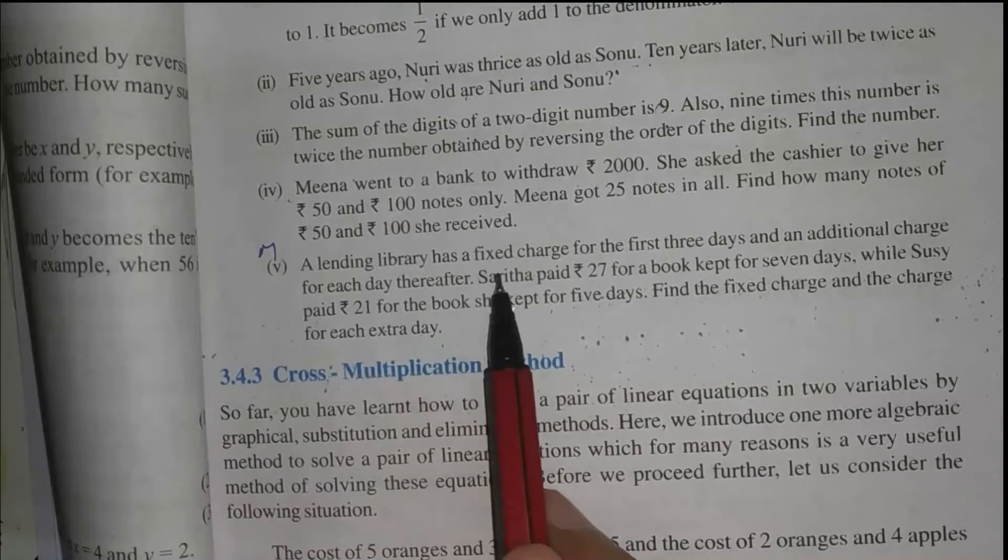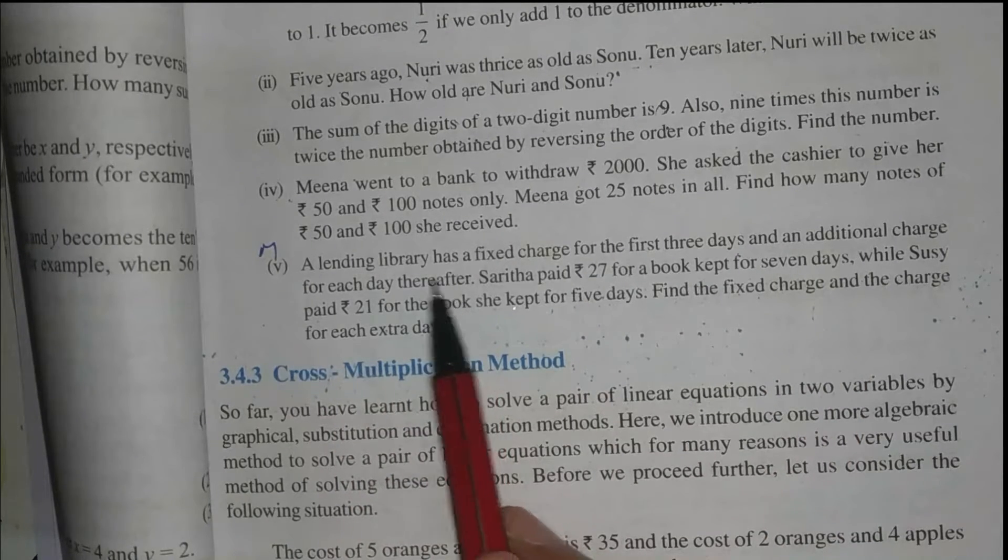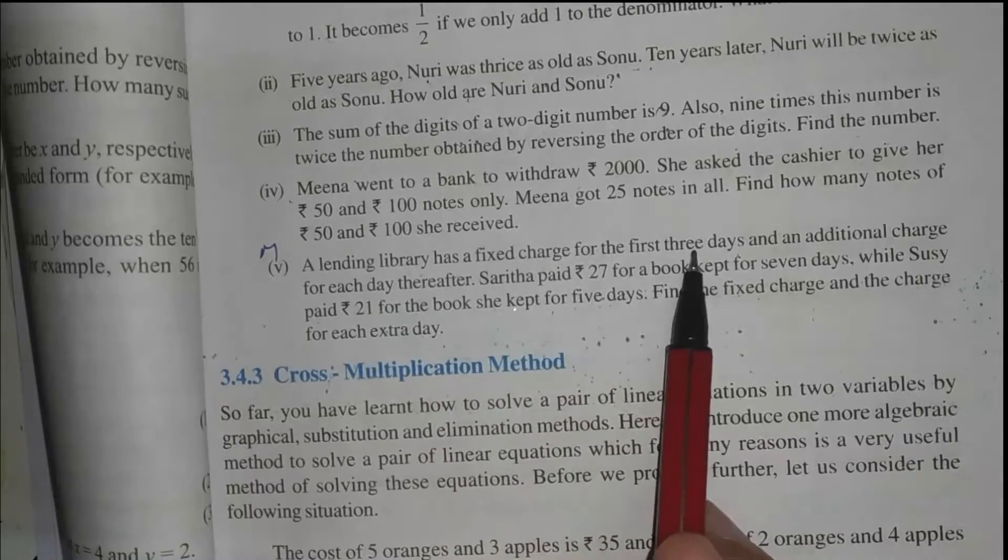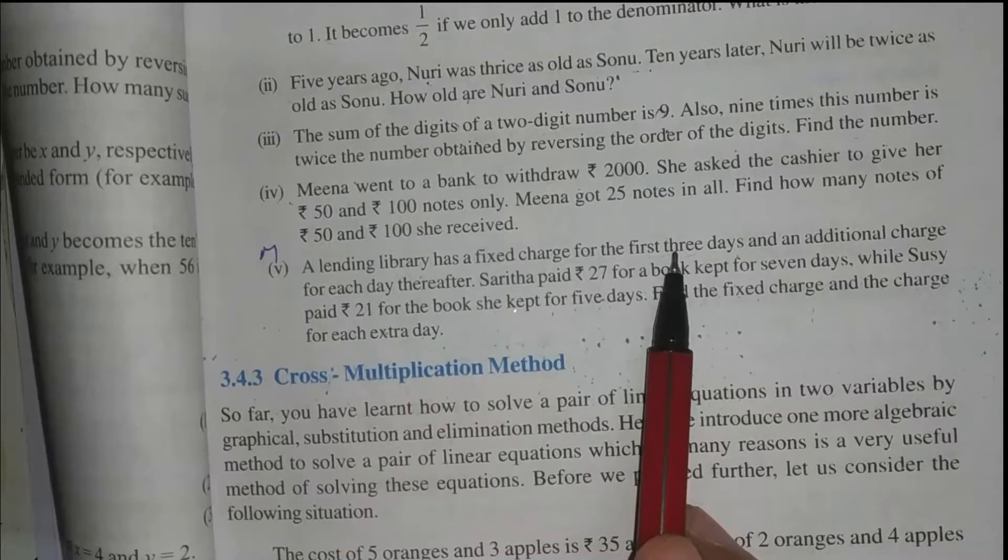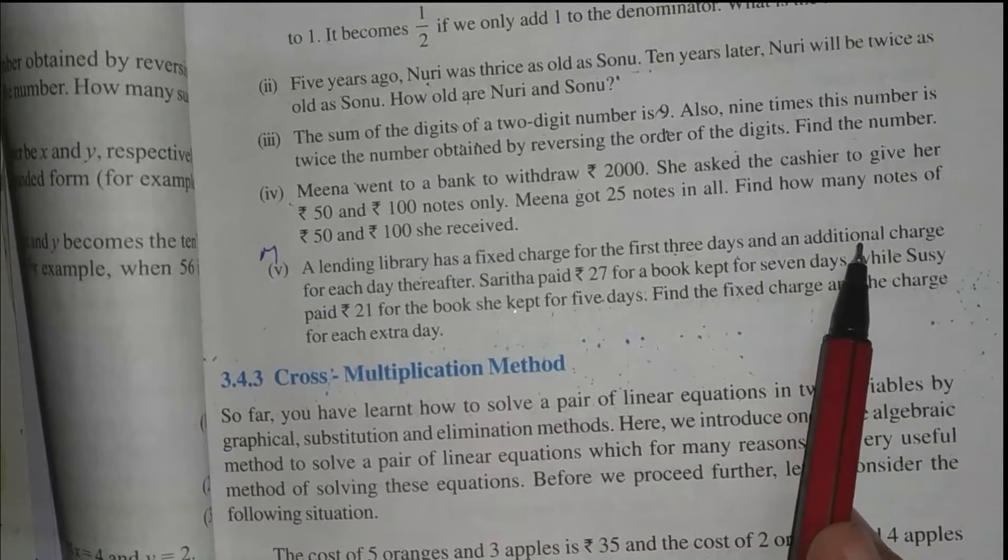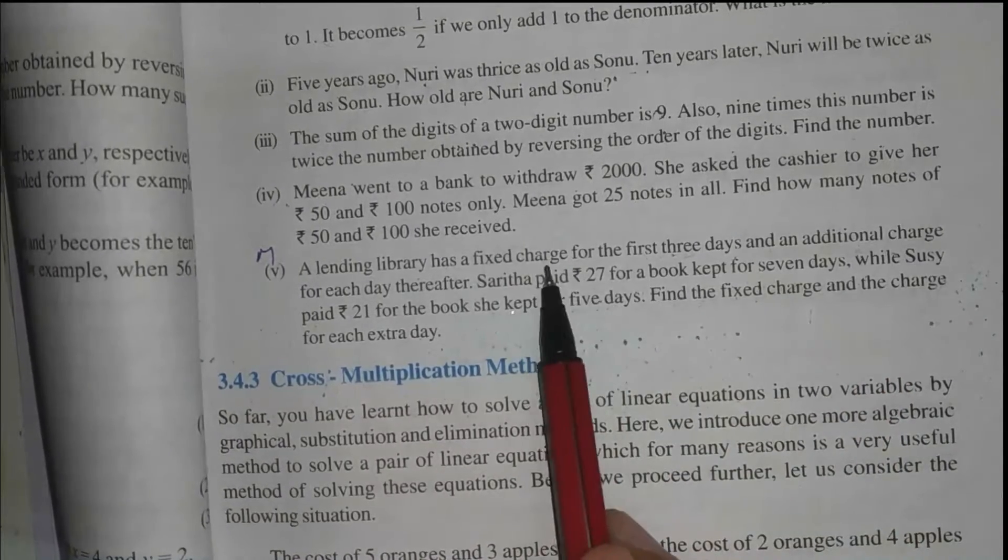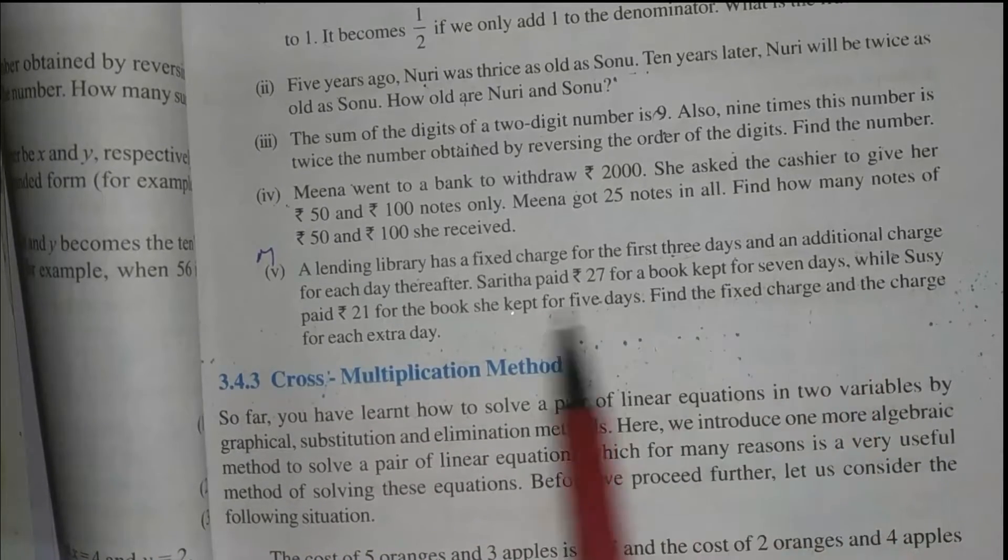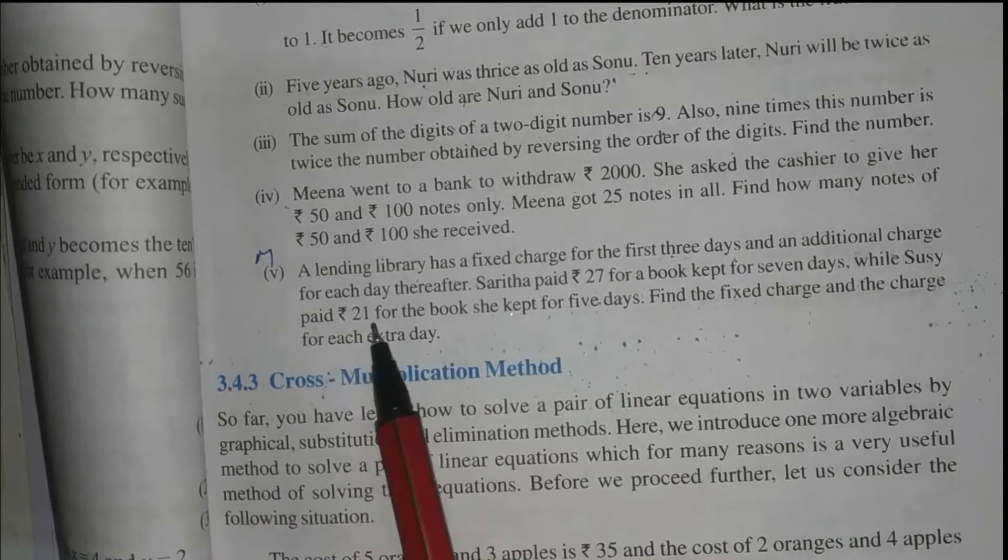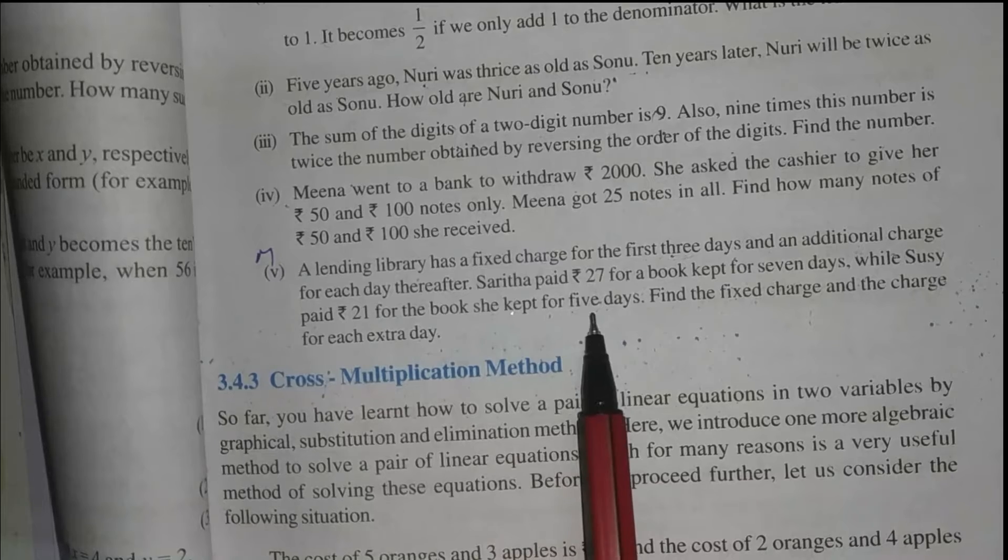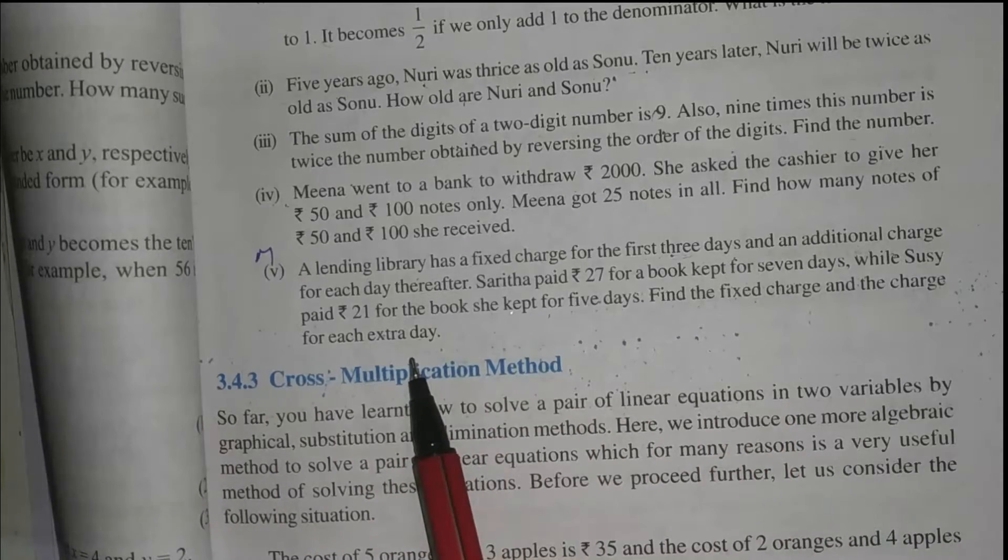A lending library has a fixed charge for the first three days and an additional charge for each day thereafter. A library hai jaha aap books liye ke aate hai. To first three days ka charge fixed hai. Aur agar uske baad, teen din ke baad agar aap book rakhate hai, to uske liye aapko additional charge dena padega. Sarita paid rupees 27 for a book kept for 7 days, while Suzy paid rupees 21 for the book she kept for 5 days. Find the fixed charge and the charge for each extra day.